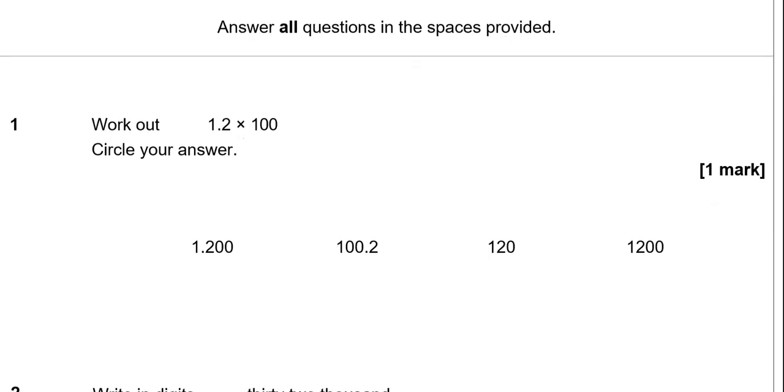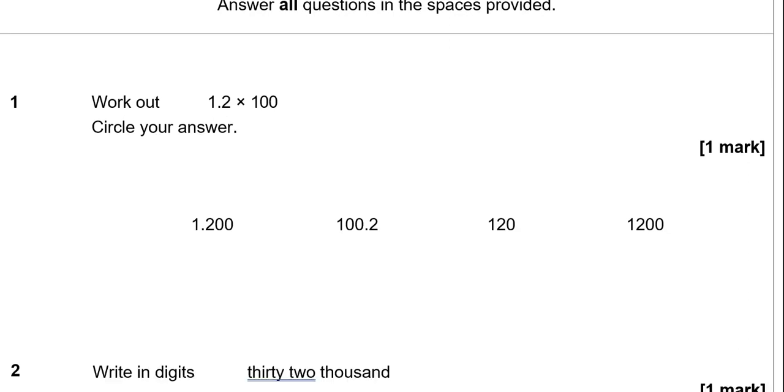Answer all questions in the spaces provided. Work out 1.2 times 100. Circle your answer. When multiplying a decimal by 100, the decimal point moves two places to the right. So 1.2, I'm going to move it one place and then another one. So here will go the decimal point and we'll fill the gap with a zero. So this has now become 120. You can disregard the decimal after the digits because it makes no difference. So 120 is the answer.